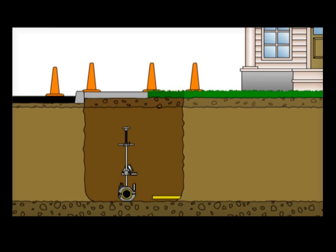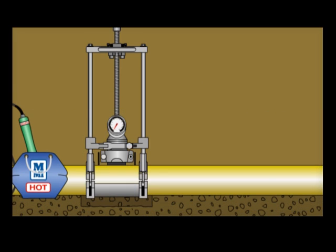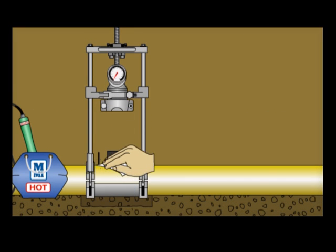The McElroy Sidewinder is the easiest machine for fusing branch saddles, tapping tees and service saddles.